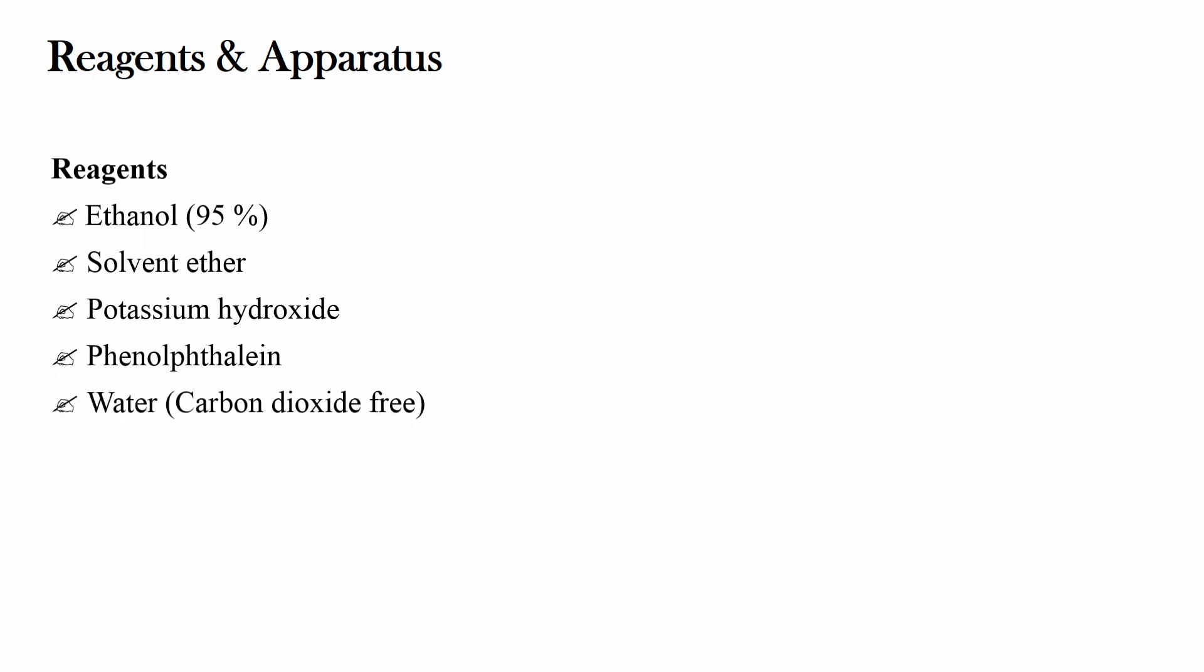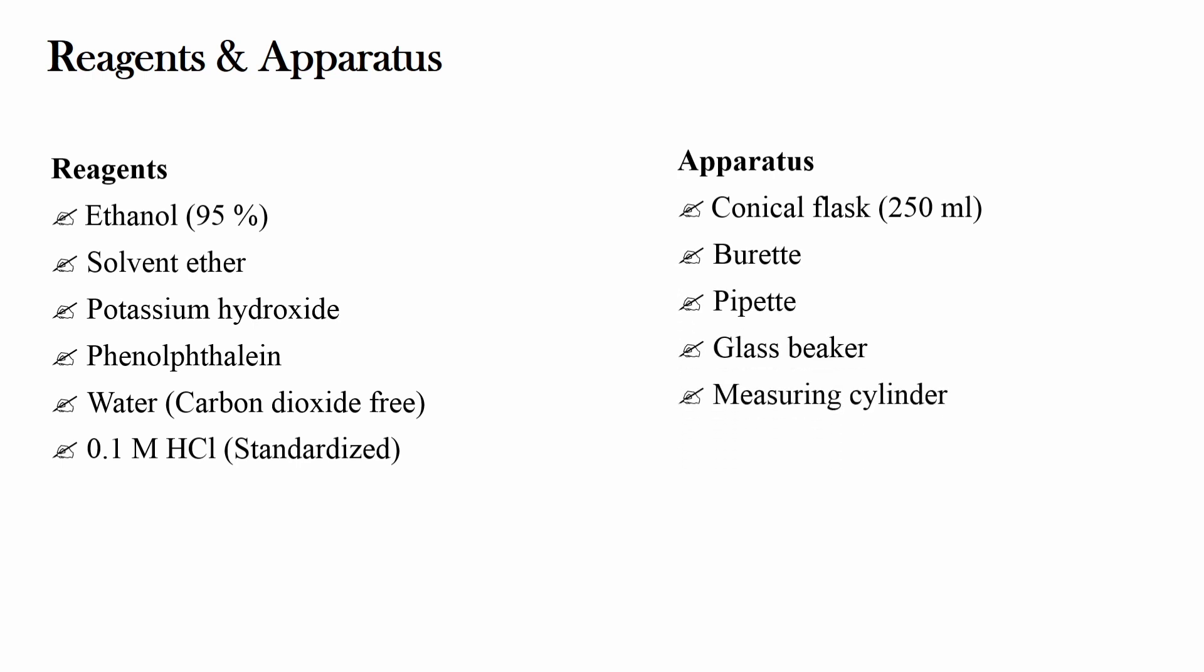Coming to reagent and apparatus. The reagents required for acid value determination include ethanol 95%, solvent ether, potassium hydroxide, phenolphthalein, carbon dioxide free water and 0.1 molar hydrochloric acid which has been standardized. The apparatus required here are conical flask, burette, pipette, glass beaker, measuring cylinder, analytical balance, water bath and the reflux condenser.